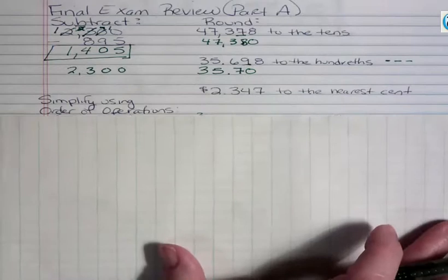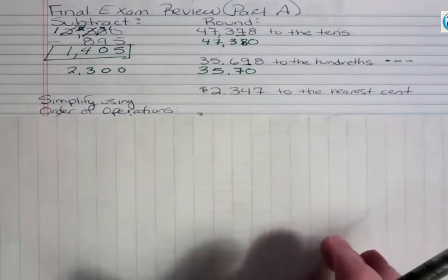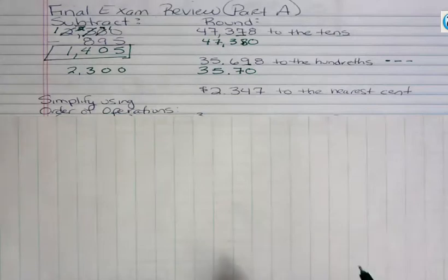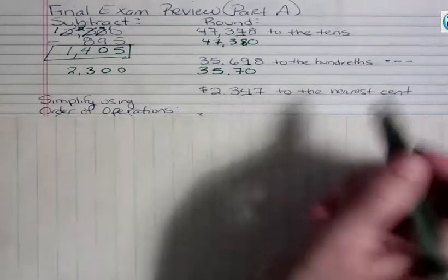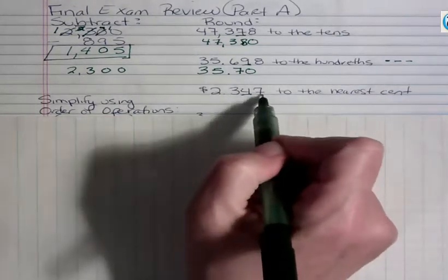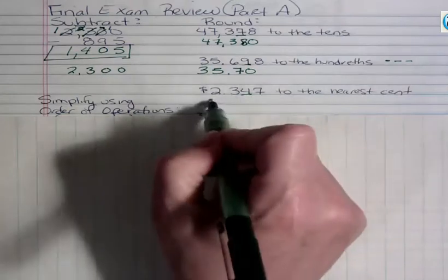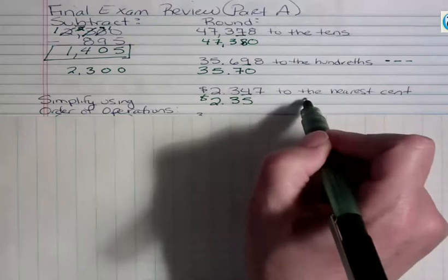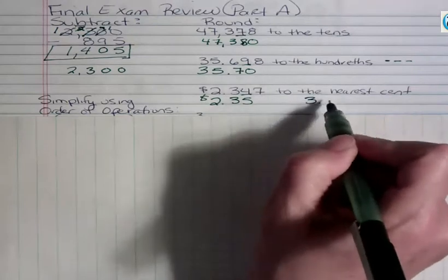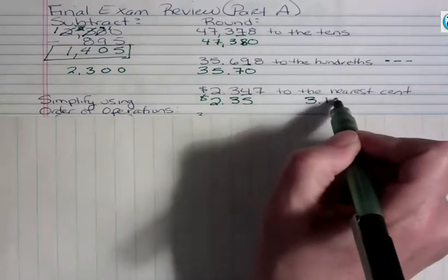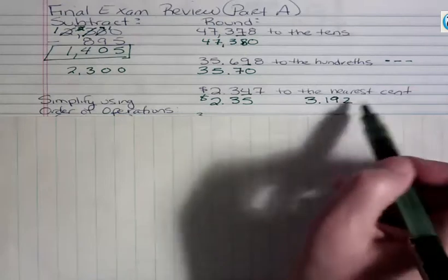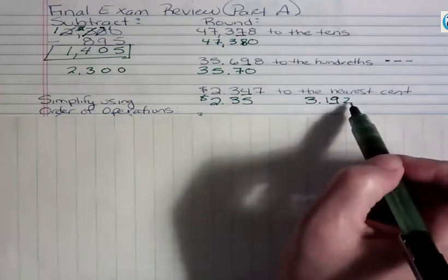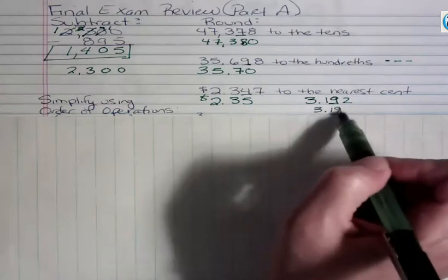And then rounding to the nearest cent, well, be careful because a cent is a 100th. A century is a 100, right? 100s is right here, so I'm rounding to the 100s in this case as well. Looking 1 to the right, that 7 is going to make that go up, and I'm going to get 2.35. If I had something like $3.192, and I wanted to round that to the nearest cent because the 2 is less than 5, I'm going to keep that the same. That would round to $3.19.